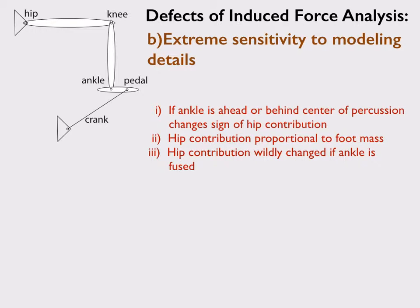Extreme sensitivity to modeling details: I already pointed out that if we change the mass of the foot, it changes the answer hugely in terms of the hip contribution. If you change the location of the ankle just slightly to the right or left of the center of percussion, it changes the hip contribution to pedaling from positive to negative. And if the ankle is fused, it makes a huge difference in the hip contribution. On the other hand, if you take a person and make any of these changes, it makes a small contribution—there's something in terms of what you see and how they pedal.